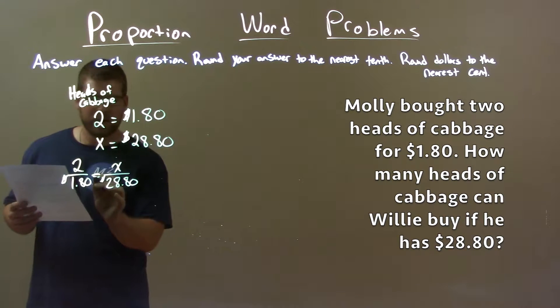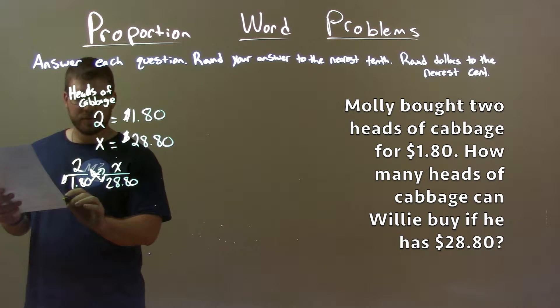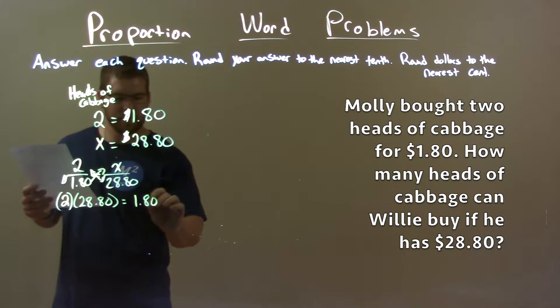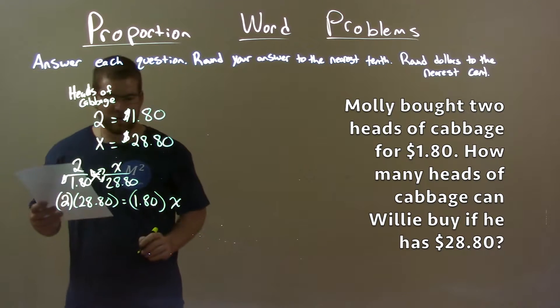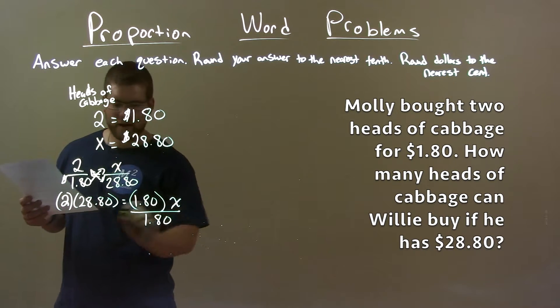We cross multiply here. So we have two times $28.80 equals $1.80 times X. We divide the $1.80 to both sides to get X by itself.